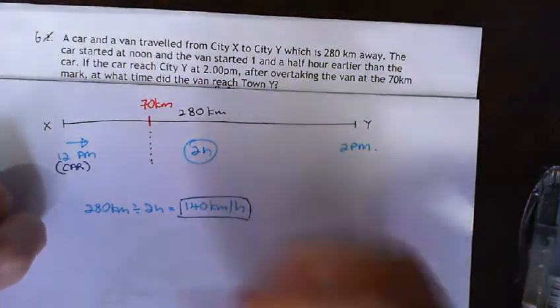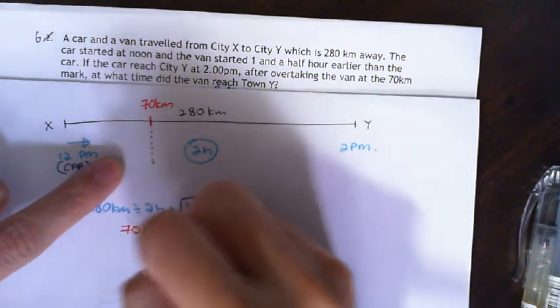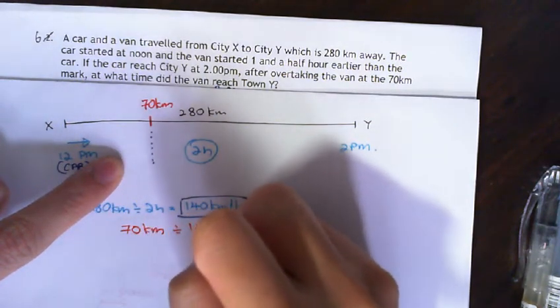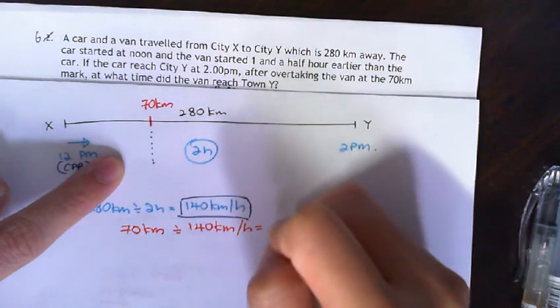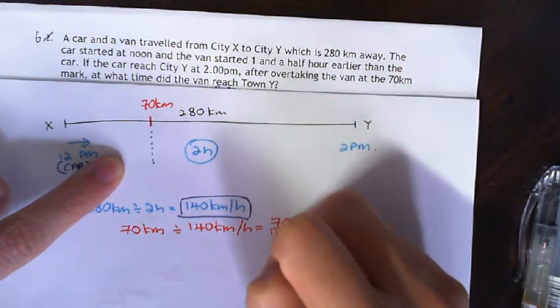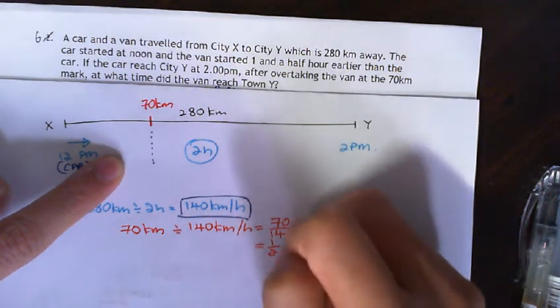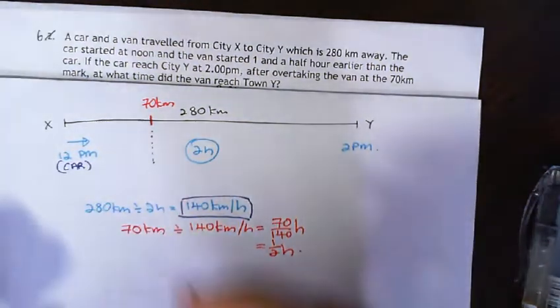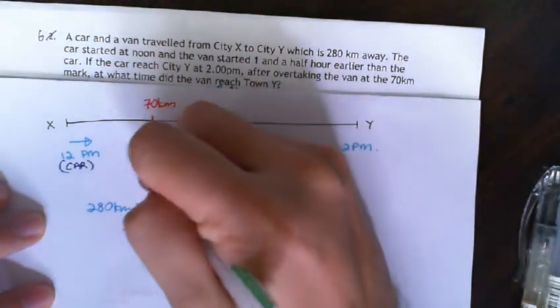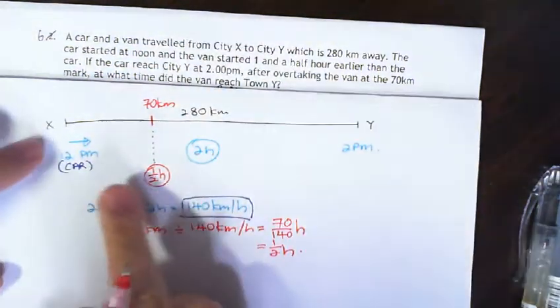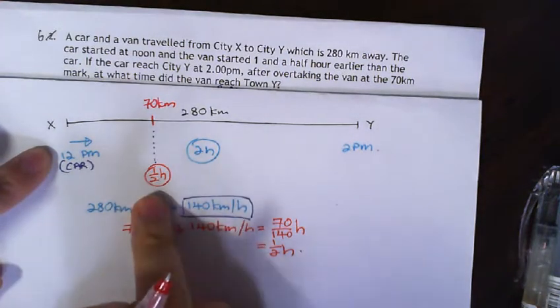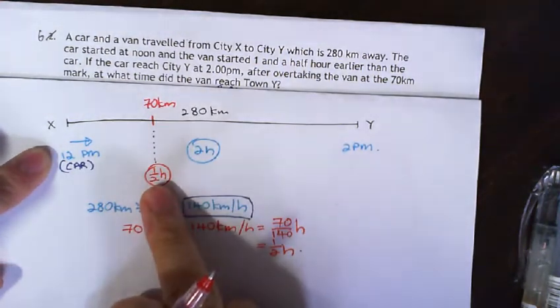That's quite simple to find because we can take 70 km divided by 140 km per hour, which equals 70 over 140, which equals half an hour. So basically, the car took half an hour to reach here. So the car actually reached here at 12:30.